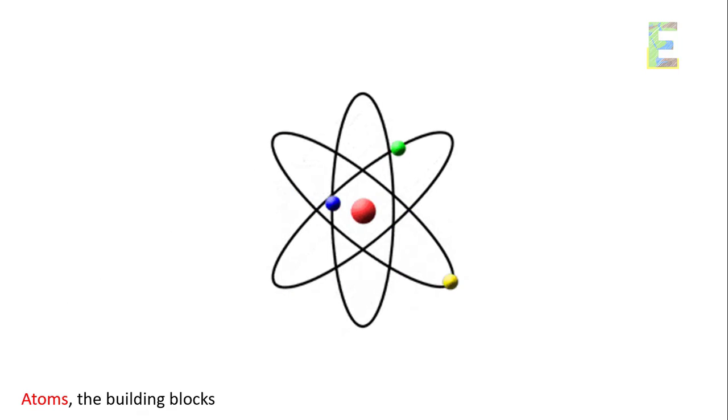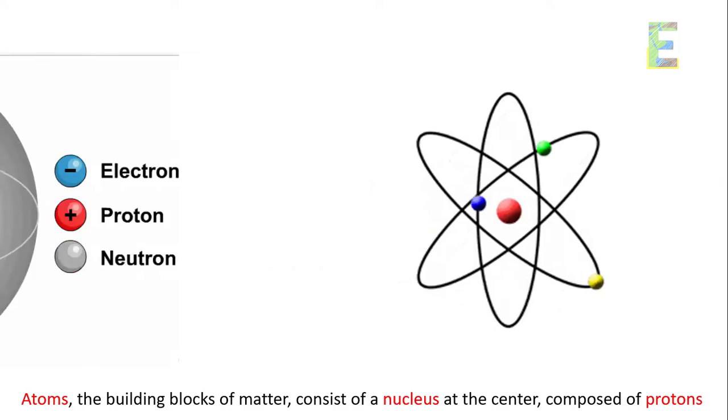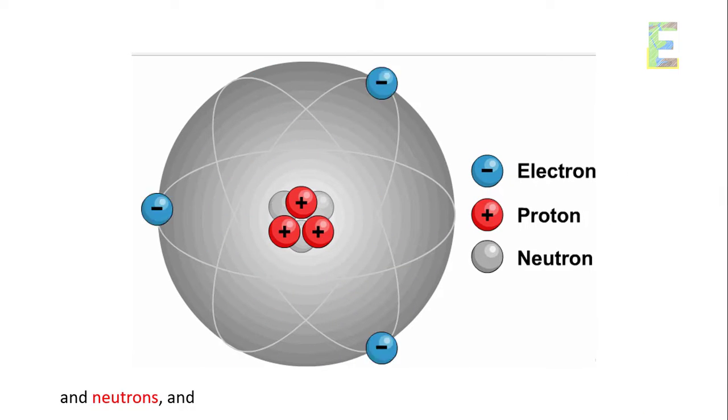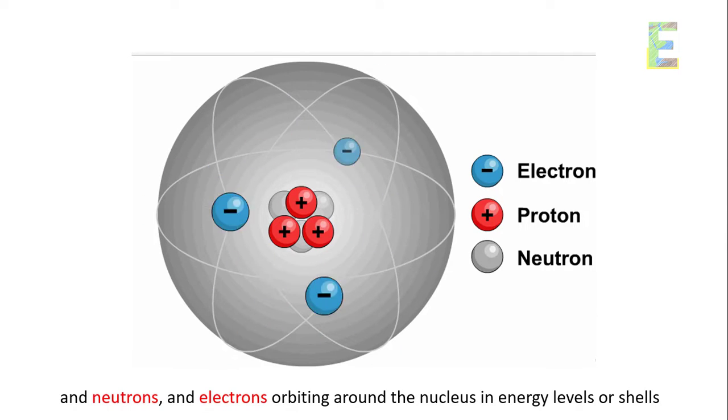Atomic structure. Atoms, the building blocks of matter, consist of a nucleus at the center, composed of protons and neutrons, and electrons orbiting around the nucleus in energy levels or shells.